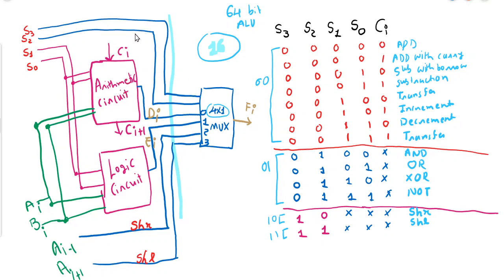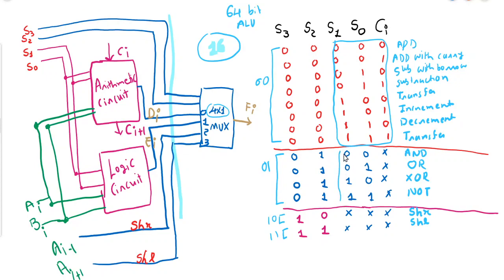Recalling the arithmetic circuit: it takes an input carry and produces an output carry, with Di providing the output. It operates based on s0, s1, and carry-in — three parameters giving eight operations total. The logic circuit does not use the carry input, only s0 and s1, giving four combinations corresponding to AND, OR, XOR, and NOT. The last two multiplexer inputs handle shift right and shift left.